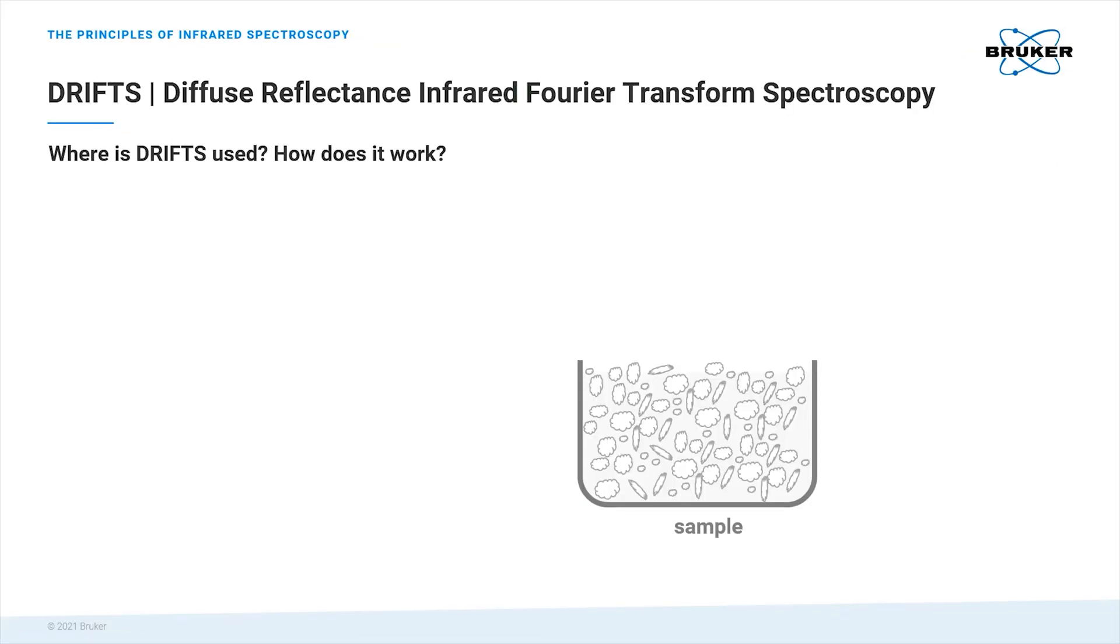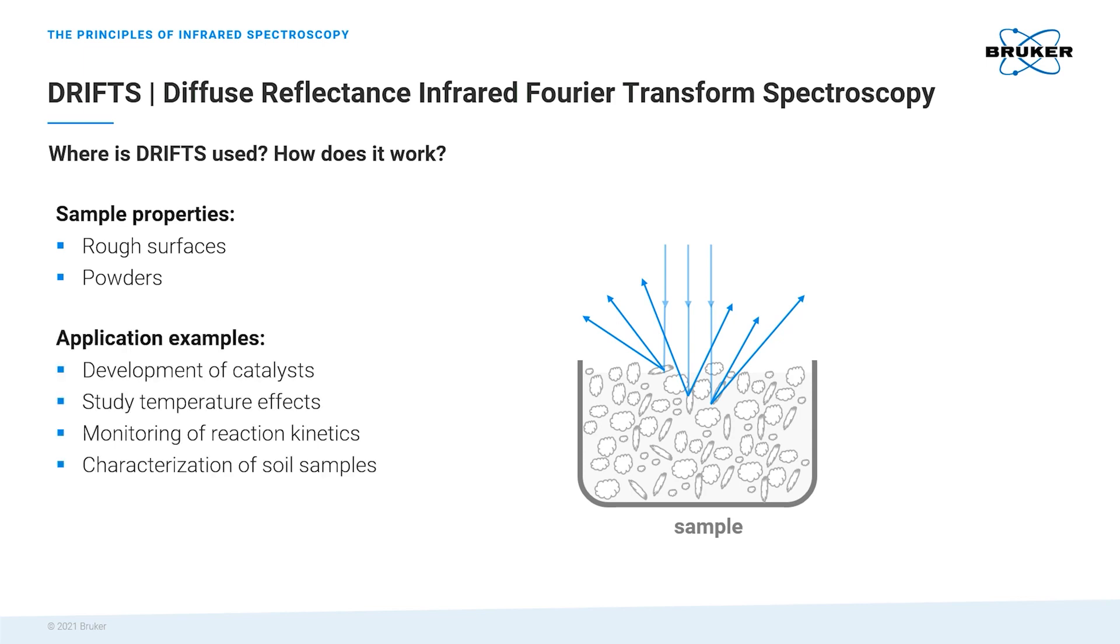During this demonstration, we would like to perform reaction monitoring using light diffusely scattered from the sample, the so-called DRIFTS configuration. This technique is particularly suitable for samples with rough surfaces and powders and is used in the development of catalysts, monitoring of reaction kinetics, and to study temperature effects or the analysis of soil samples, among other things.